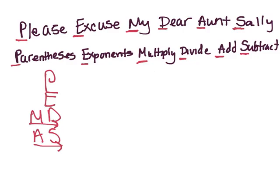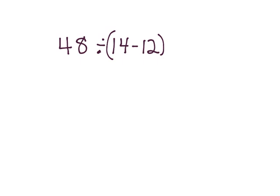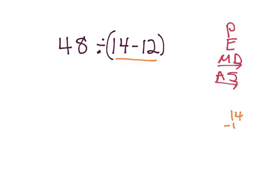So we're going to do some examples. We have 48 divided by (14 minus 12). First thing we're going to do is write our PEMDAS. We're not going to be dealing with exponents, but first we look for parentheses. Are there any parentheses? Yes. So we do what's in parentheses first — we underline that. What is 14 minus 12? That would be 2.